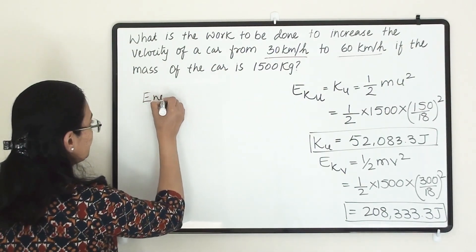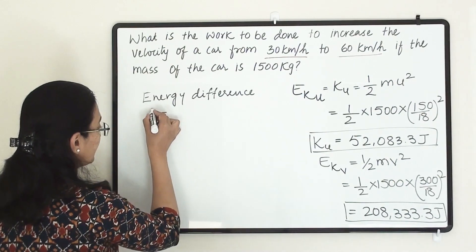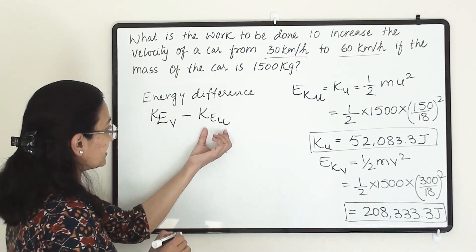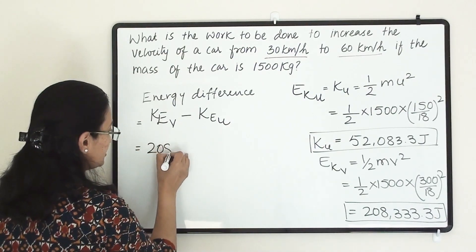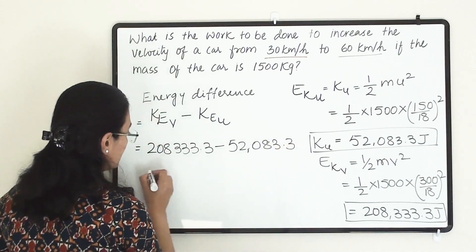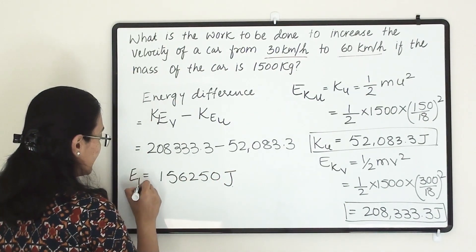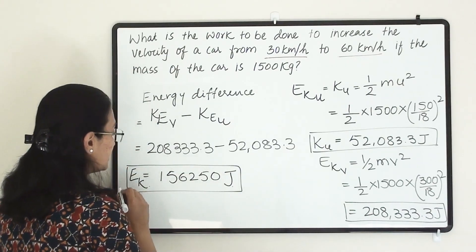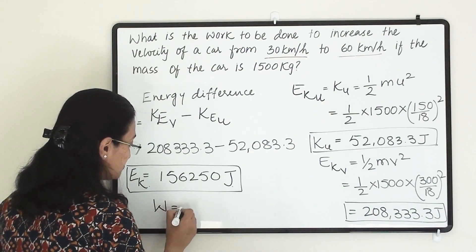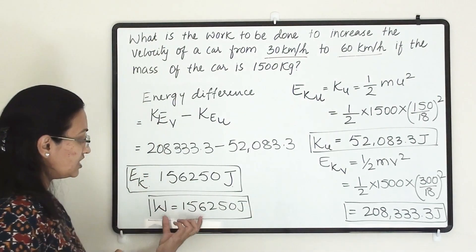So the energy difference = final kinetic energy − initial kinetic energy = 208,333.3 − 52,083.3 = 156,250 joules. This much kinetic energy has been used during the increase in velocity, and this much work has been done on the vehicle. Used energy equals work done.